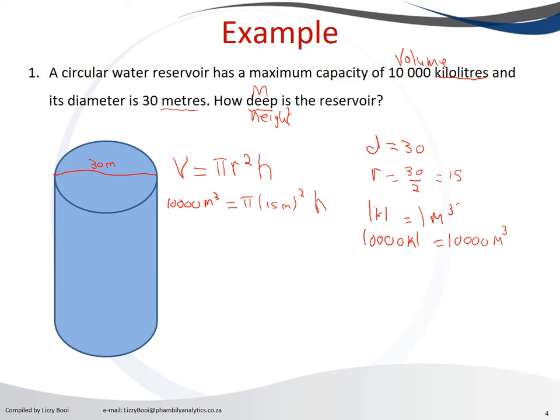We can take 15 meters squared, which is 225 meter squared times pi times height. Now we can divide both sides, so we divide this side by 225 meter cube times pi, and also this side by 225 meter cube times pi.